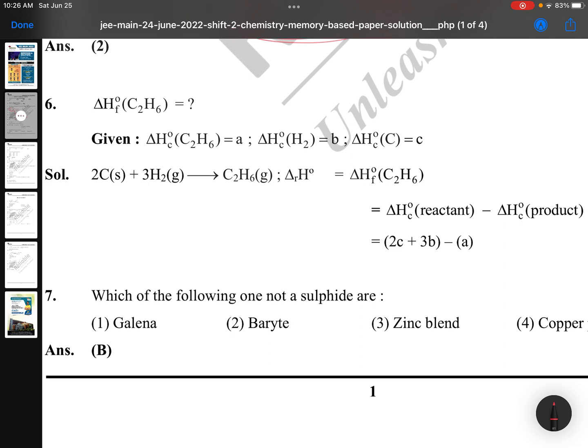Here is a numerical related to heat of formation of ethane. Some equation is given: carbon plus hydrogen gives ethane. Heat of formation of ethane is asked, so the formula is reactants minus products. Data is not completely available, so here a, b, c like the previous one. Thermodynamics concept, again easy question, thermochemistry.